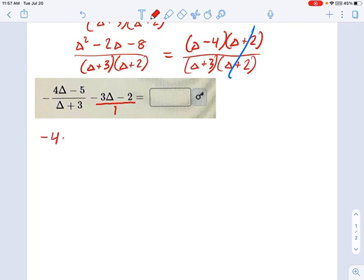I have negative 4 delta. And remember, this negative sign is multiplied by the 4 delta and the negative 5. So, don't lose track of that. It's negative 4 delta plus 5 divided by delta plus 3. But what I'm going to try to do is put this part in parentheses and say we're adding that thing. I'm adding a negative 3 delta and I'm adding a negative 2. So, let's just make this the addition of two fractions.